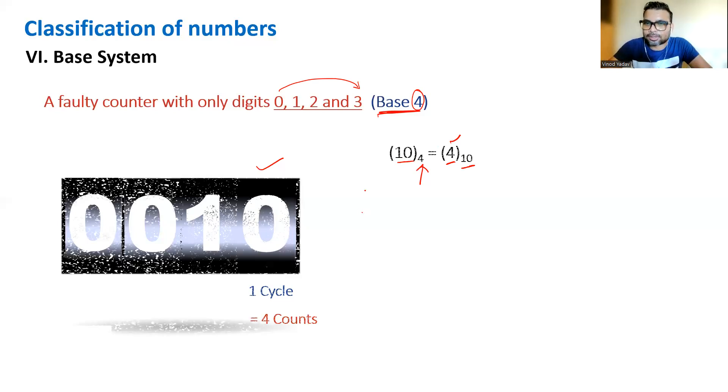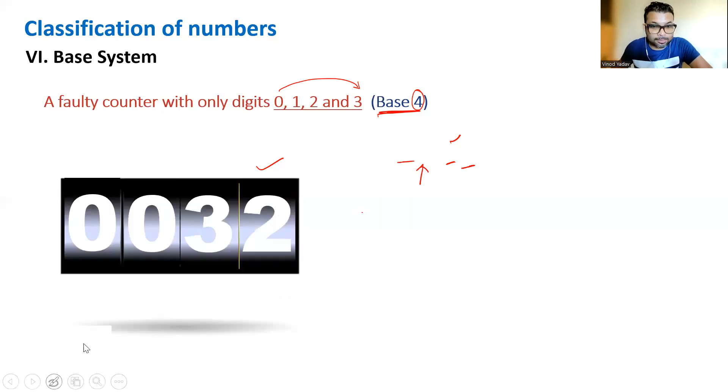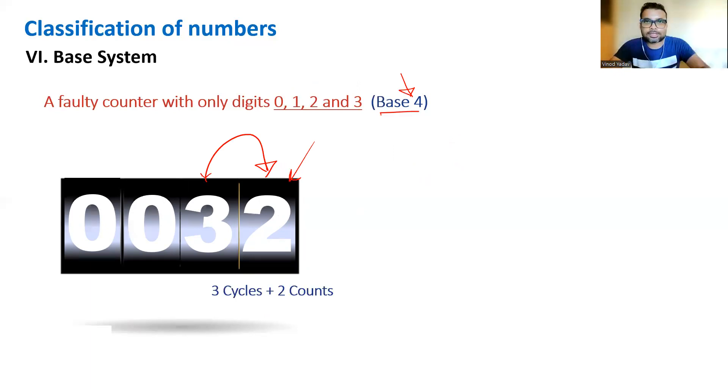One more example. How will you read this? This is still base four only. Three means three cycles are done, and in one cycle how many counts? Four counts. So three cycles means three fours are twelve counts, and in the fourth cycle in progress, two counts are done. So three cycles plus two counts, and three cycles means twelve counts, three fours are twelve, so twelve plus two equals fourteen. So three two in base four will look like fourteen in our base, base ten.